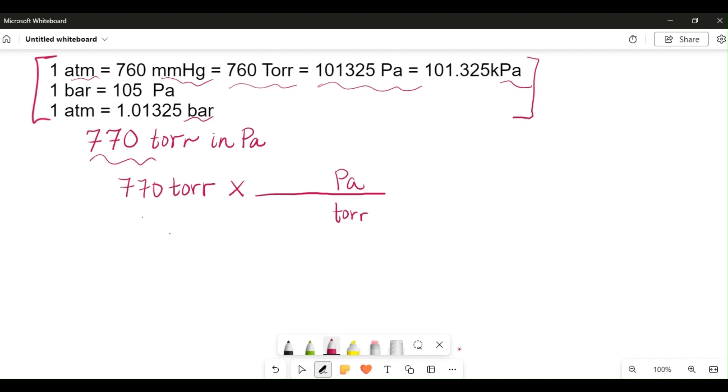We see that 760 Torr is equivalent to 101,325 Pascals. So that would be 760 Torr at the bottom and 101,325 Pascals. The next thing you do is simple math - you just cancel out the Torr.